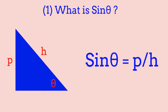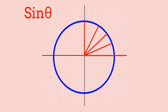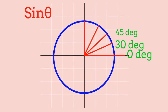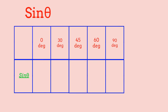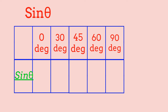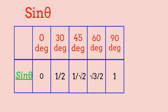Now let's move on to the trigonometry ratio table of sin theta. We will calculate the value of sin theta where theta is 0 degrees, 30 degrees, 45 degrees, 60 degrees, and 90 degrees. Sin 0 is 0, sin 45 is 1 over square root of 2, sin 60 is square root of 3 over 2, and sin 90 is 1.